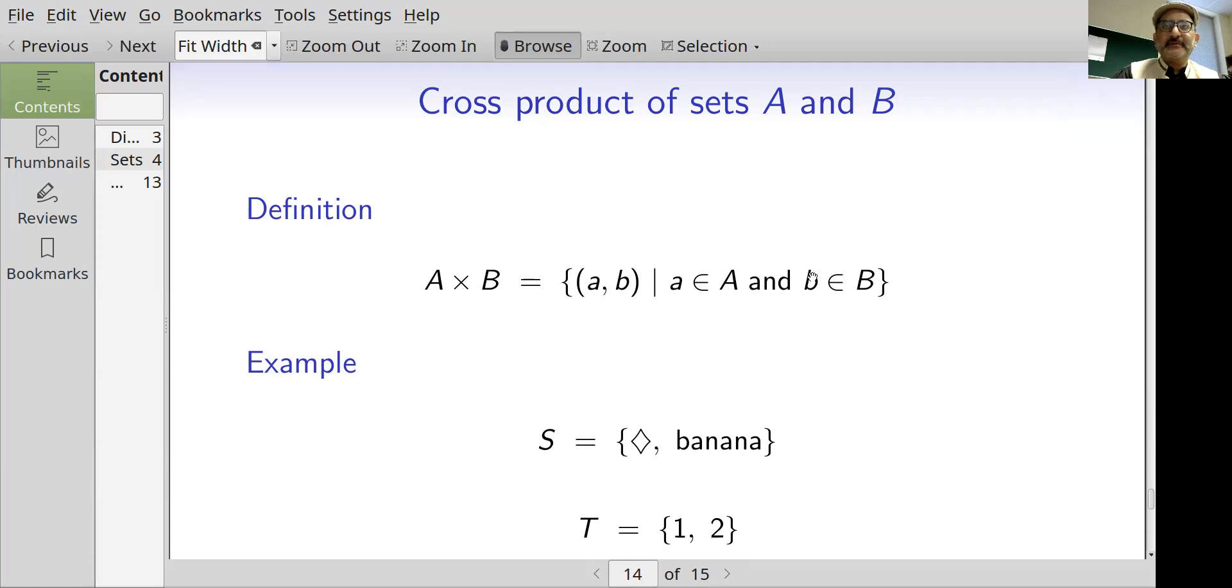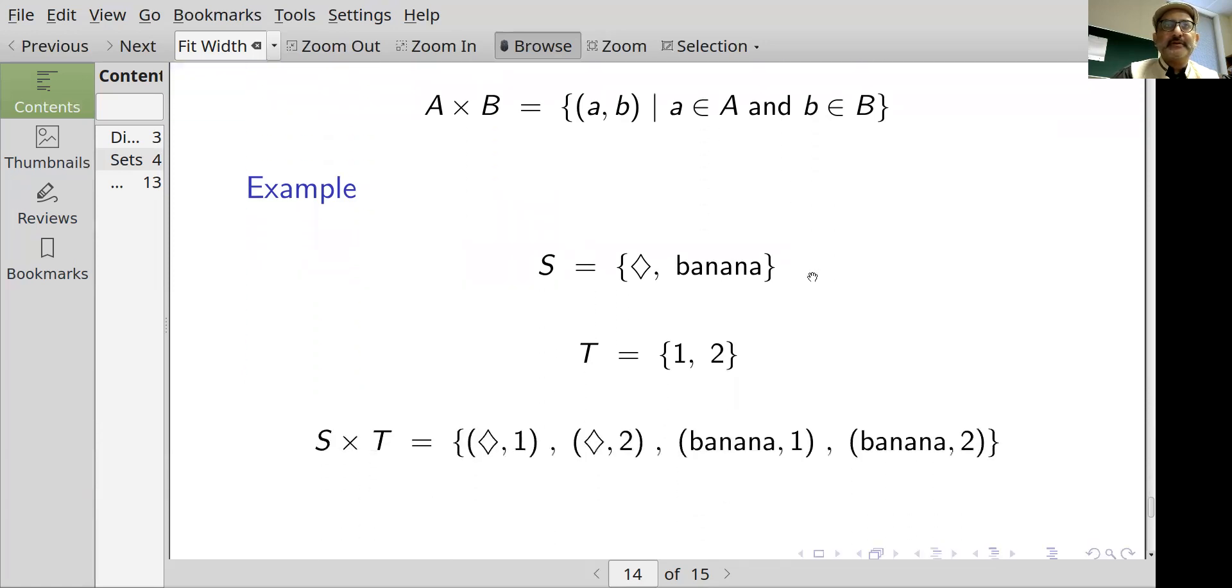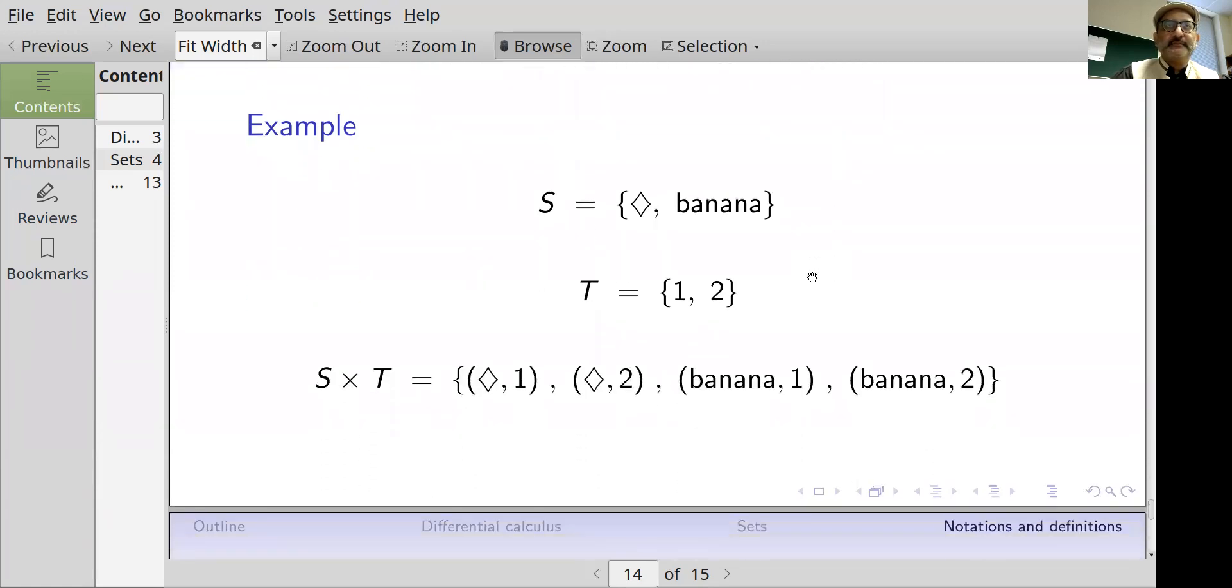An example of a Cartesian product of two sets: Let S be the set with the elements diamond, banana. Let T be the set with elements one and two. Then the Cartesian product of S with T is the set of ordered pairs diamond one, diamond two, banana one, banana two.